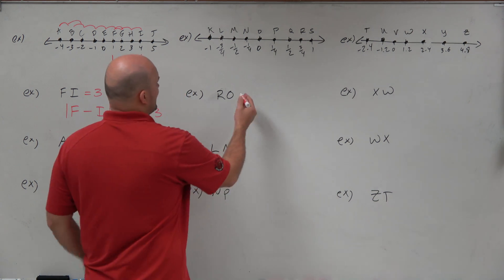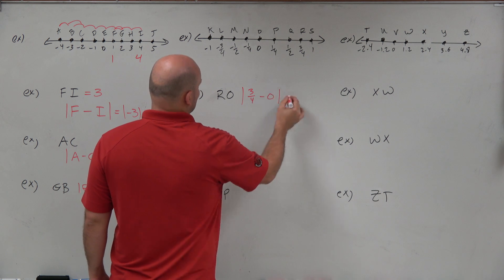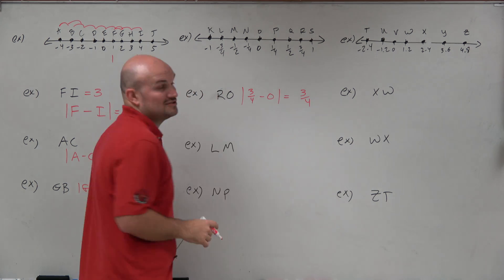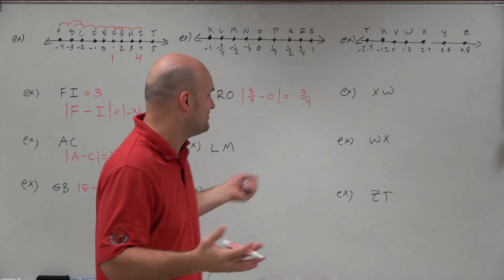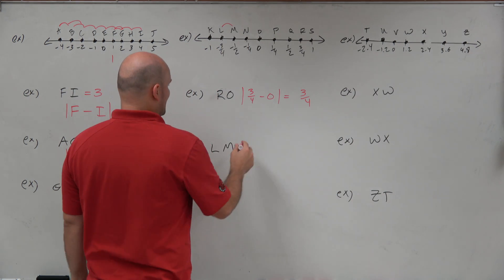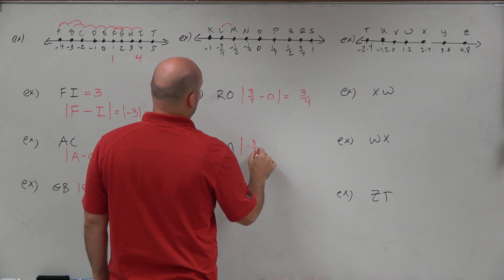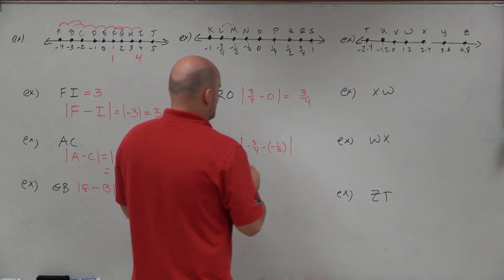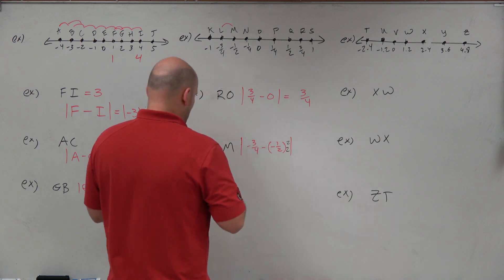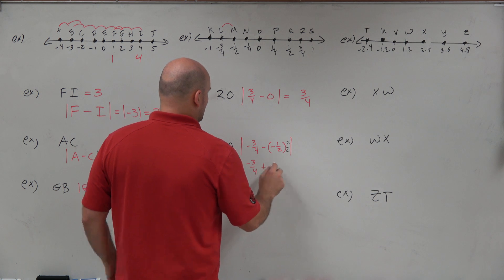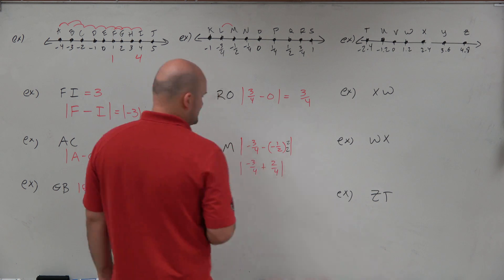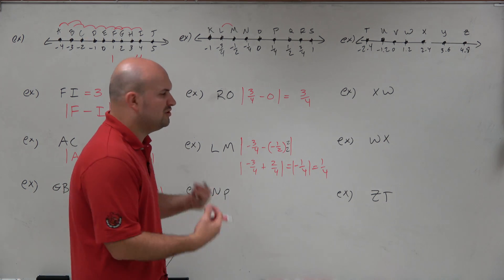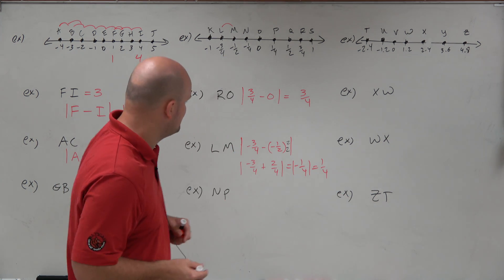For r minus 0: r is 3/4, minus 0. The absolute value of 3/4 minus 0 is just 3/4. Absolute value of 3/4 is just 3/4. So just because it has fractions doesn't make it a difficult problem. For l to m: we take the absolute value of negative 3/4 minus a negative 1/2. Remember when subtracting fractions to get common denominators — multiply by 2/2. So we have |negative 3/4 plus 2/4|, which equals |negative 1/4|, which equals 1/4.